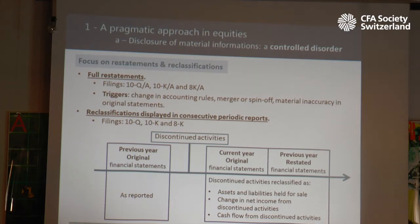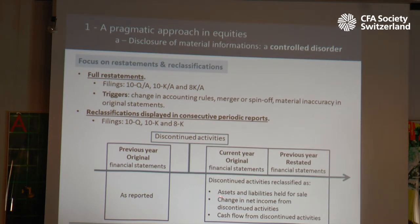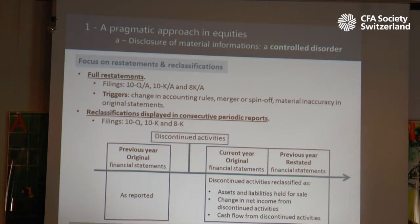For discontinued activities, both original statements and restatements are disclosed in the same filing. Assets related to discontinued activities will usually be reclassified as held for sale. We will have reclassifications into change in net income from discontinued activities and cash flow from discontinued activities.